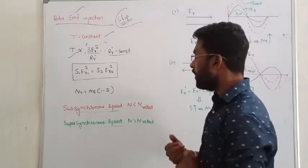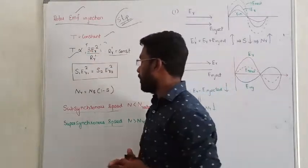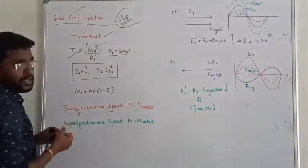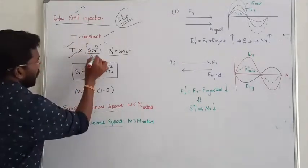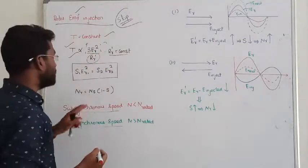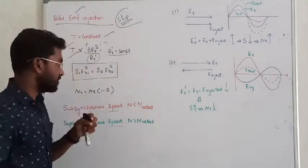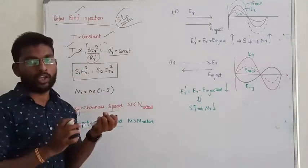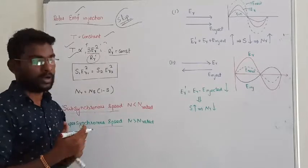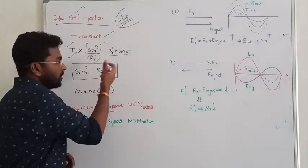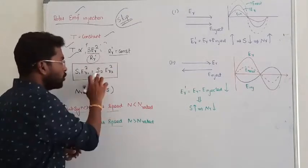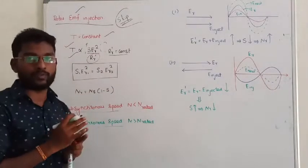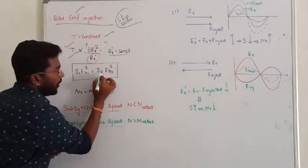Now let us solve the problem by considering two cases. We know torque is constant, and if torque is constant, rotor resistance is also constant. Then there are two cases: in case number one, slip will be given; in case number two, they might give some voltage or some new slip value. Whatever is given, you can work with either the slip or the EMF — if you fix one, the rotor relationship holds.